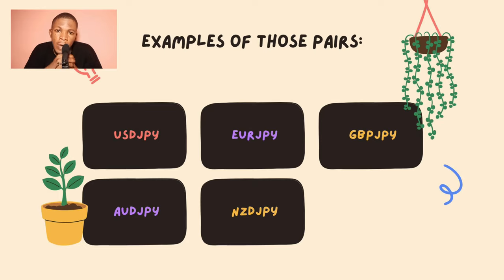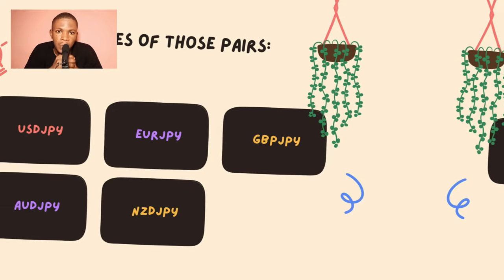Now there are some currency pairs that do not go up to four decimal places — they have specific ways of calculating pips. Examples of those pairs are JPY pairs, such as USD/JPY, EUR/JPY, GBP/JPY, AUD/JPY, NZD/JPY, and others. Another exception is gold, XAU/USD.